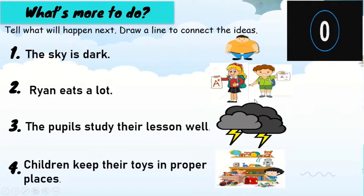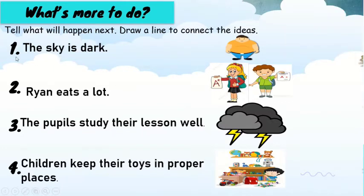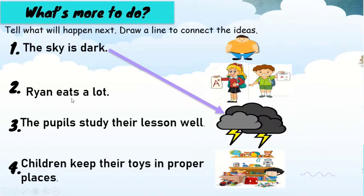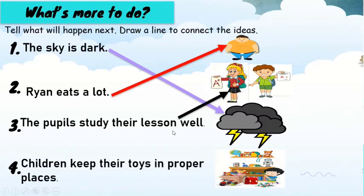Time's up. Let us check your answer. Number one: the sky is dark. Very good, correct. Number two: Ryan eats a lot. Very good. Number three: the pupils study their lesson well. Correct. Number four: children keep their toys in proper places. Very good.